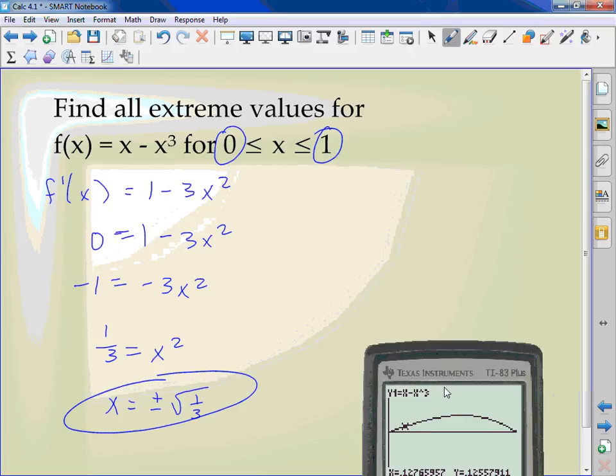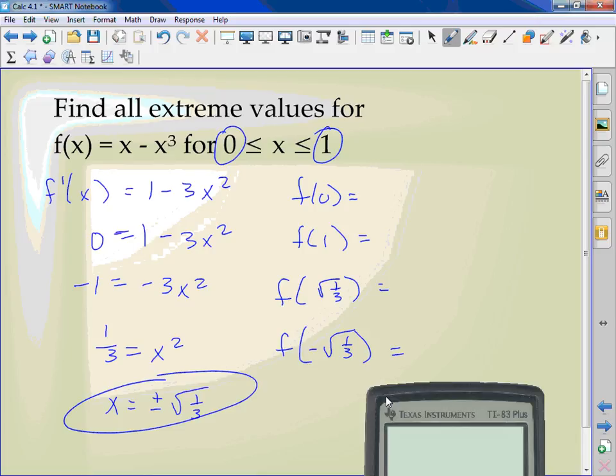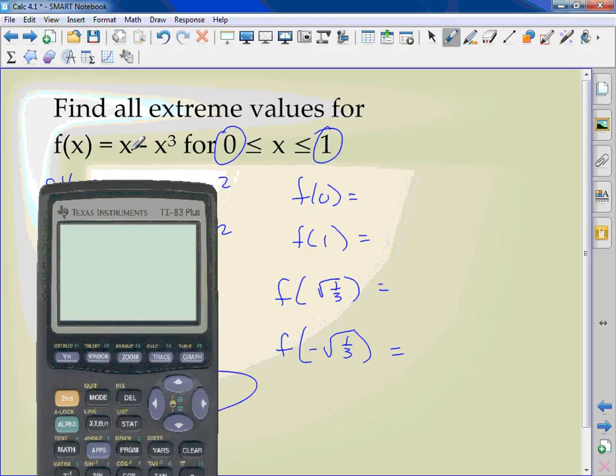So I have f of 0, f of 1, f of the square root of 1 third and f of the negative square root of 1 third. If I put in 0, 0 minus 0 is 0. If I put in 1, 1 minus 1 cubed, 1 cubed is 1, 1 minus 1 is 0.